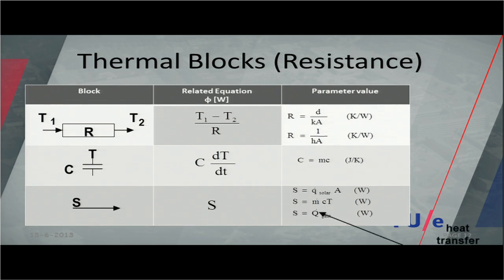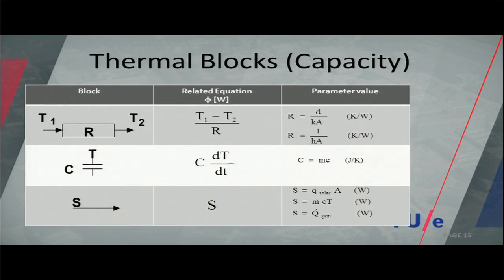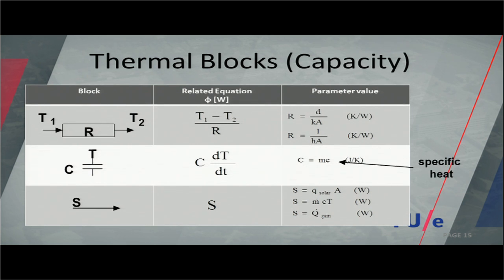Then we have the second block: capacity. Heat is stored in a capacity. The heat flow stored in the capacity is C times dT over dt, where the small t stands for time. The capacity parameter can be calculated as C equals mass times specific heat.